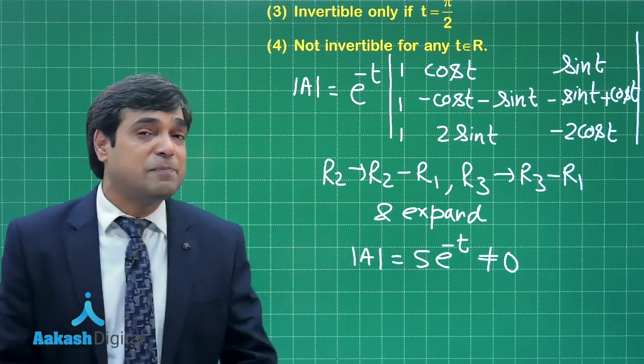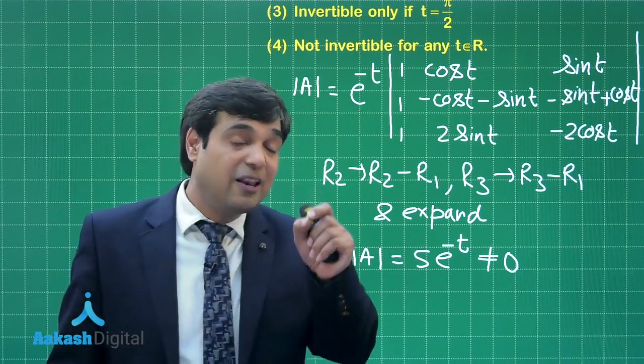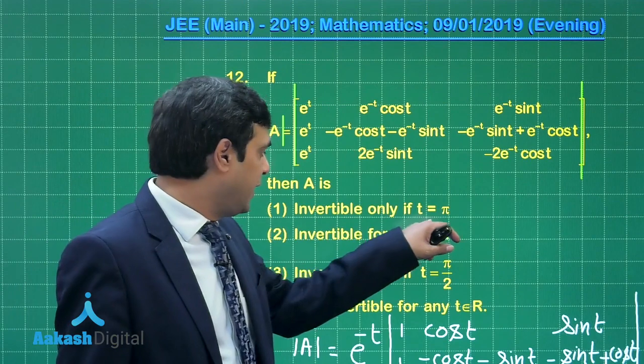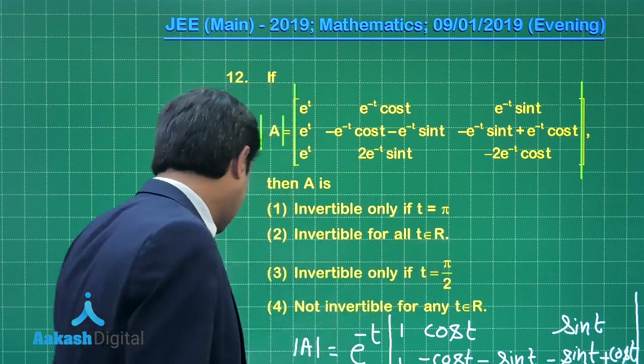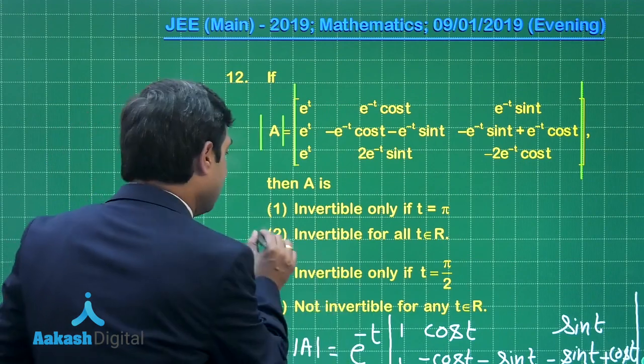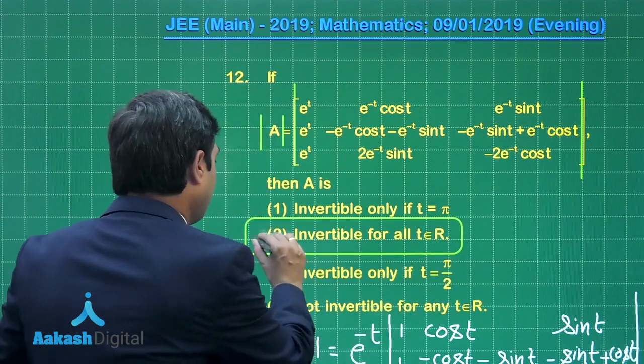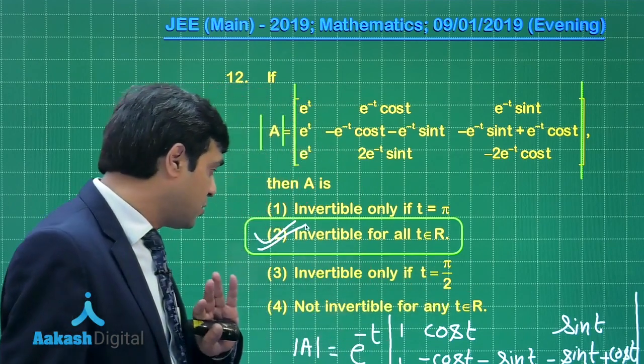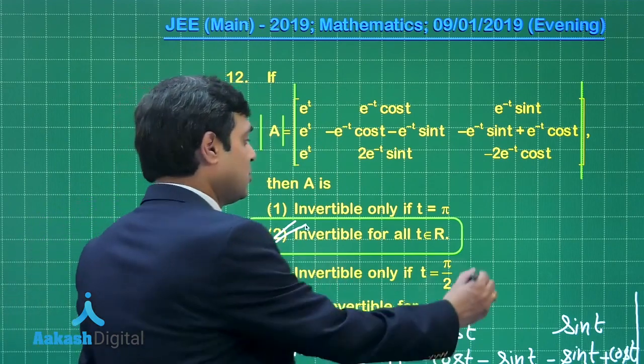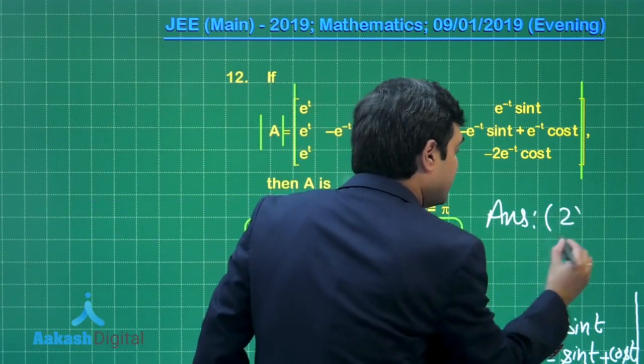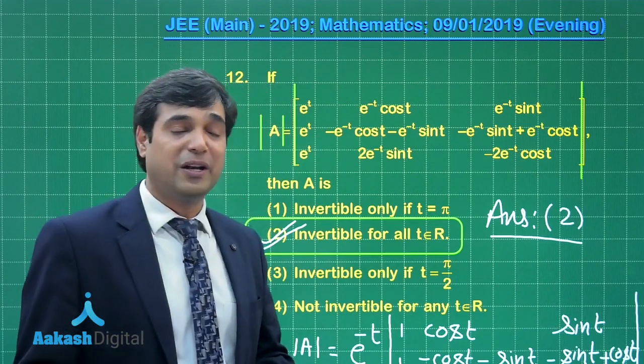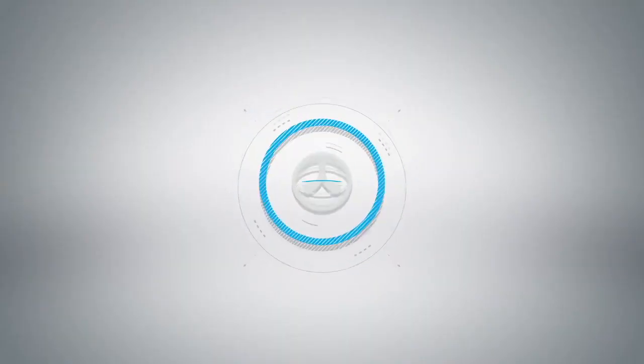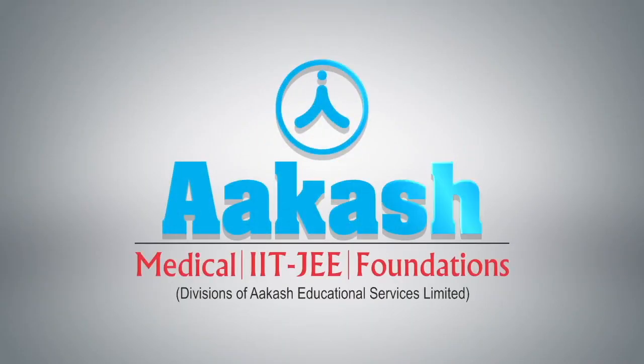So whatever be the value of t, this matrix is invertible as it is non-singular. So let us mark the correct answer from the given options. Invertible only if, no. Invertible for all values of t, yes, that is what we are looking for this question. So second option is the correct answer for this question. Let us read the third, fourth as well. Invertible only if t = π/2, no. Not invertible, no. So the correct answer is simply option number 2. I am sure this is also clear. Let us move on to the next one, that is question number 13.